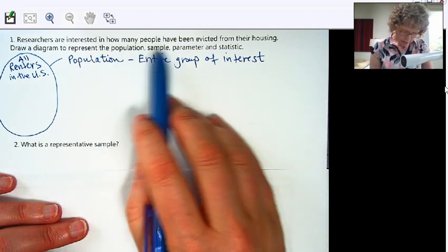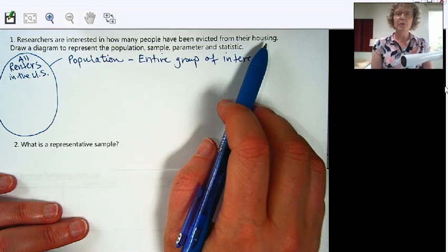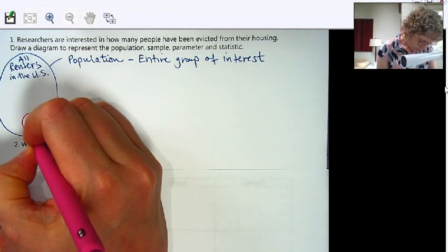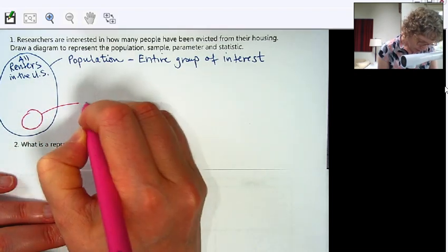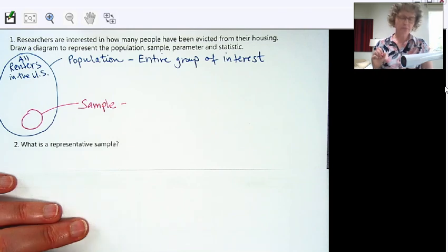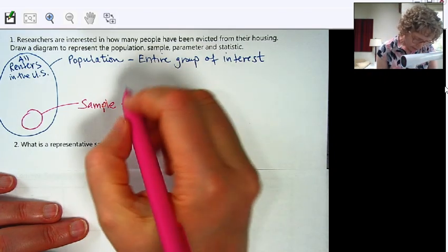Now we want to know how many of them have been evicted. Well, we can't ask everybody. It's nearly impossible. So we want to take a sample, so a smaller circle.